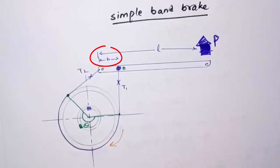B is distance between the pivot point O and capital B point. Small l is the length of the lever. P is the external force to apply the brake. P is a pull force.